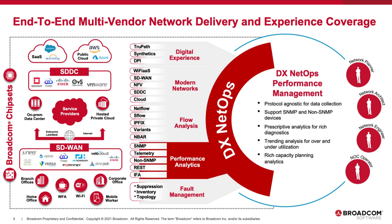When we look at DX NetOps Performance, fault and performance go together to agnostically collect data across multiple vendors, correlating, cleaning, and normalizing that data across multi-vendor technologies, then presenting it in a unified, easy-to-understand fashion. For example: what does the performance of network delivery look like when it traverses Cisco gear, then moves into VMware virtual instances, maybe goes into a Juniper firewall, and out into an internet service provider?